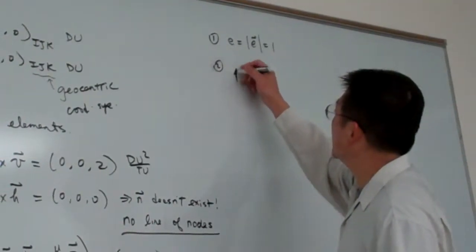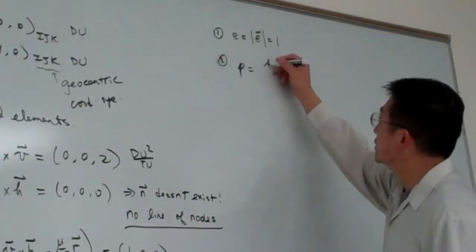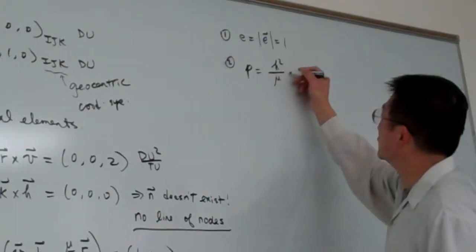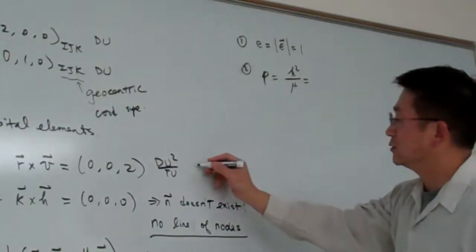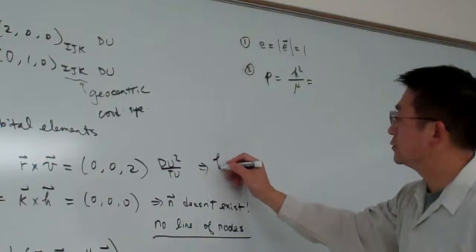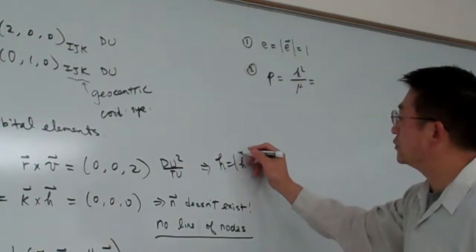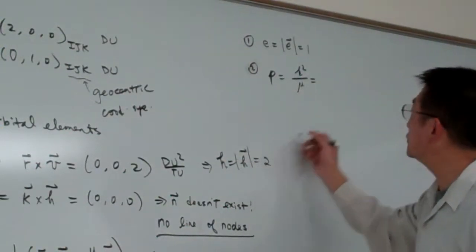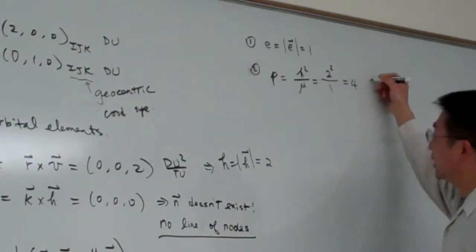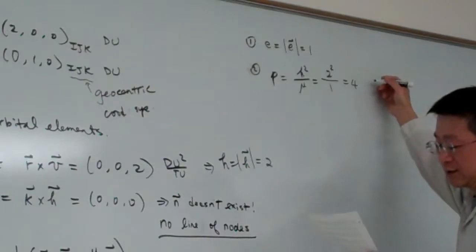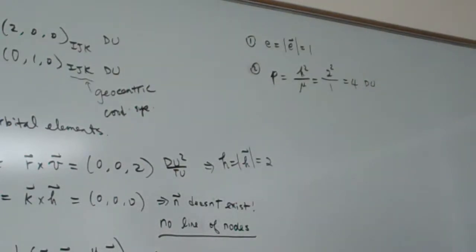And then p, the magnitude of p is h squared divided by mu. So here we have h squared. So from here, the h equal to the magnitude of this equal to 2. So here is 2 squared divided by 1 is equal to 4. And that one is du.